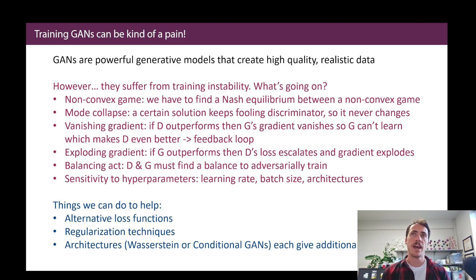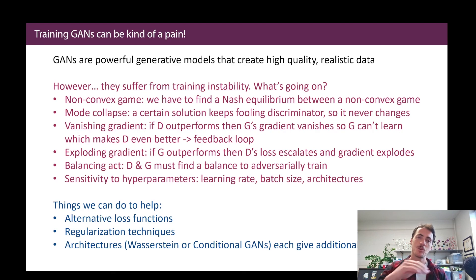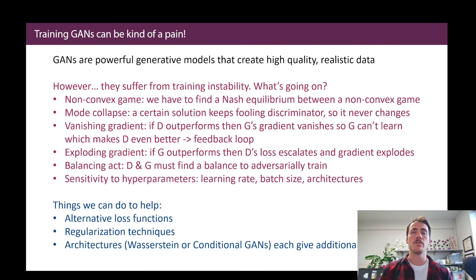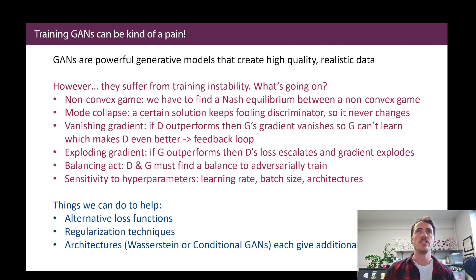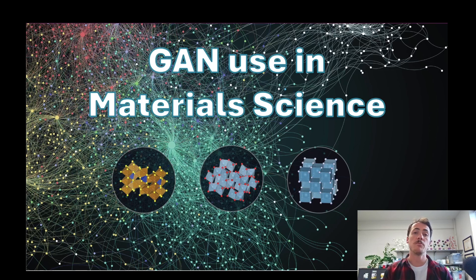To make GANs work better, there are alternative loss functions — sigmoids approach asymptotes with very real or very fake data, causing vanishing gradients. There are regularization techniques to penalize overfitting. And there are different architectures, in particular conditional GANs or Wasserstein GANs, which give additional information to the generator or discriminator to improve performance. With our foundation set for how GANs work, let's dive into the next video on how GANs have been used in material science.